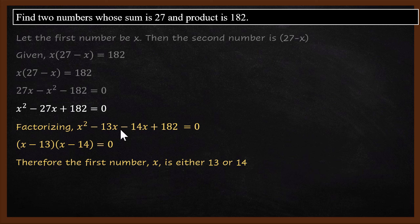So once you found that, next step you get x minus 13 multiplied by x minus 14 equals 0. This tells that x is either 13 or x is 14. The first number is either 13 or 14.